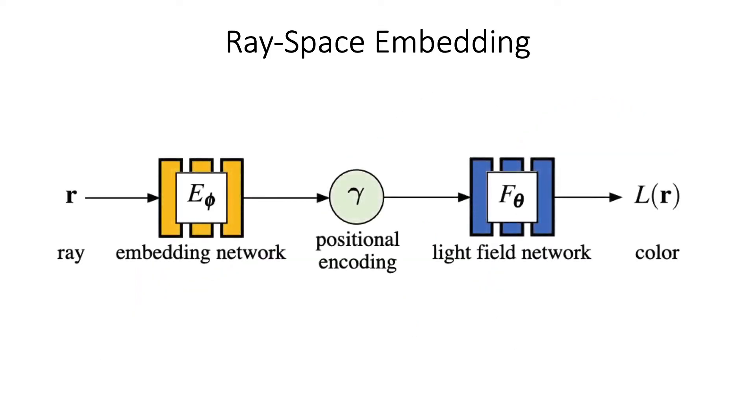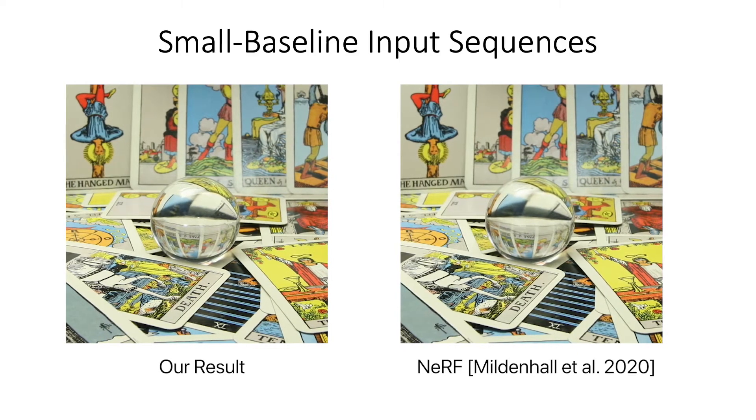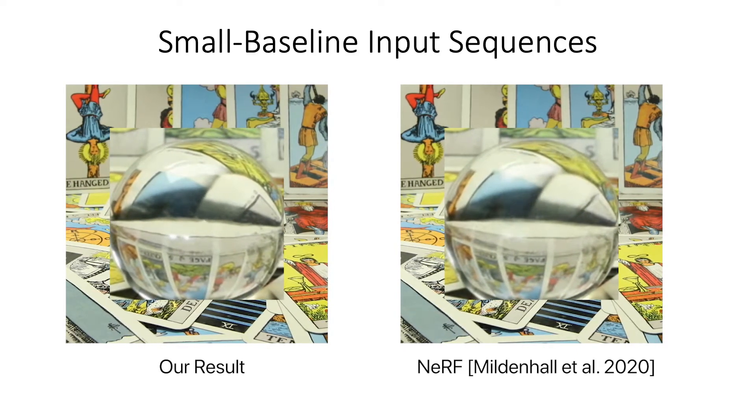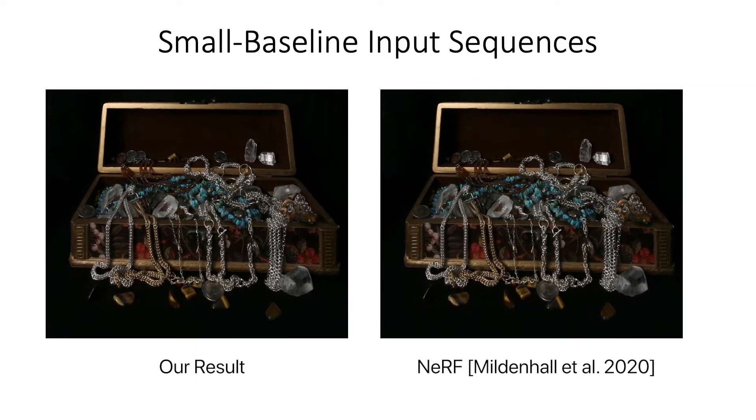We refer readers to our paper for the design of such embedding networks in our full neural light field architecture. Including embedding networks in a neural light field architecture leads to state-of-the-art view synthesis quality for dense input sequences, such as those from the Stanford light field dataset.